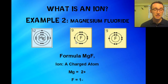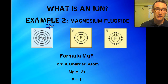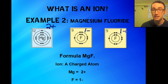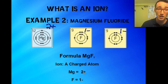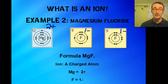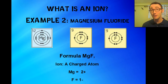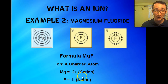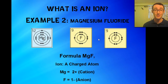So in this case, magnesium will have a charge of plus two, because it loses two electrons — if you lose something that's negative, you become positive. And fluorine will have a charge of negative one, because it gains one single electron. That's what we call the ion charge. The ion charge of magnesium is plus two, and the ion charge of fluoride is negative one. We also call a positive ion a cation, and a negative ion an anion. So an ionic compound is always made up of a cation and an anion.